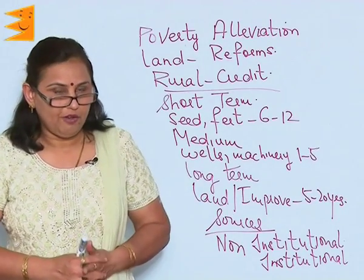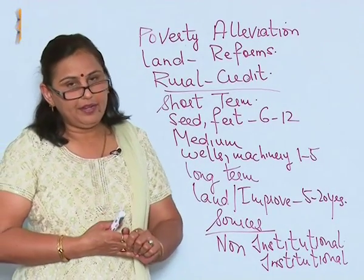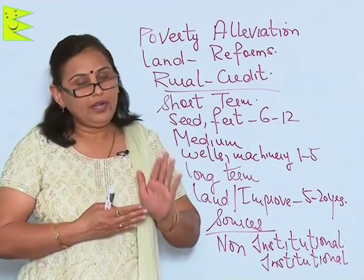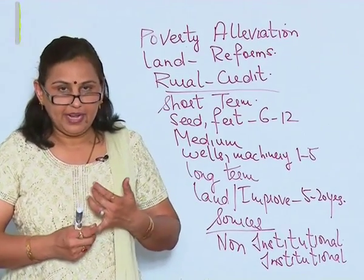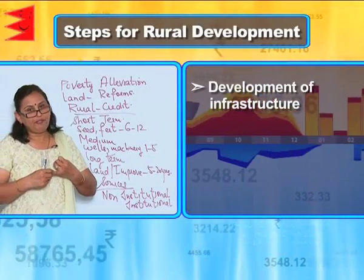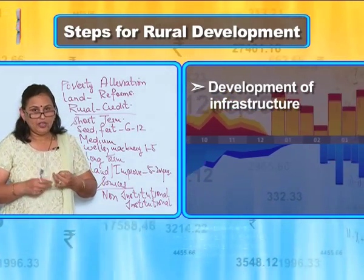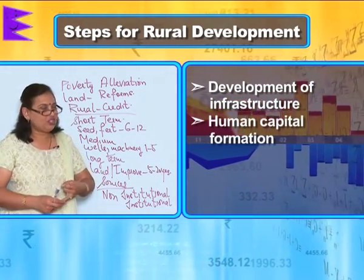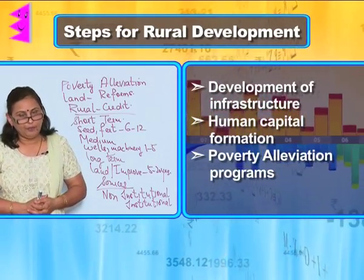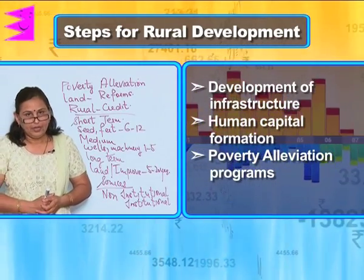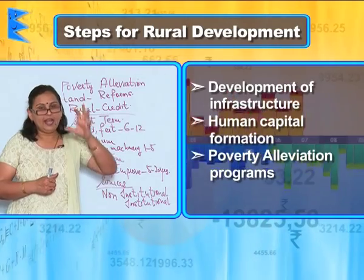We were talking of the steps which are required for rural development. In that we had seen the development of infrastructure, the human capital formation, and the third is the poverty alleviation program — that is to say, the government of India has to launch certain programs and schemes to see that people who are poverty stricken in rural areas